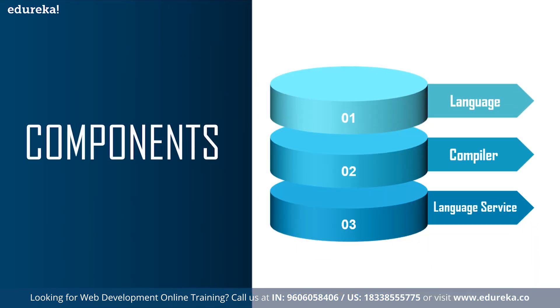Now let's talk about the different components of TypeScript. There are three types. First is Language — this comprises the syntax, keywords, and type annotations. Second is the TypeScript Compiler (TSC), which converts TypeScript instructions to their JavaScript equivalent. Third is the TypeScript Language Service, which exposes an additional layer around the core compiler pipeline for editor applications and supports common editor operations.